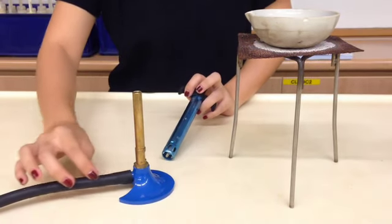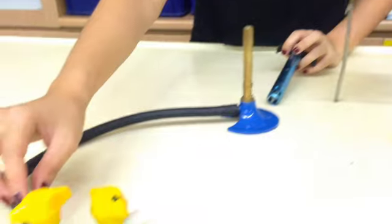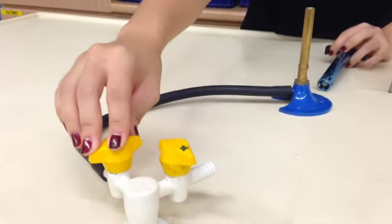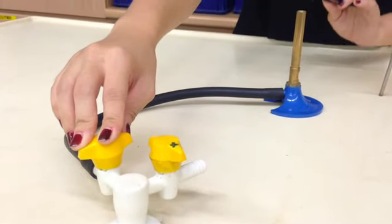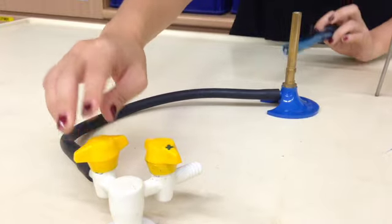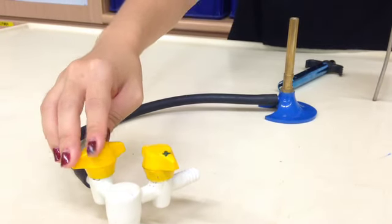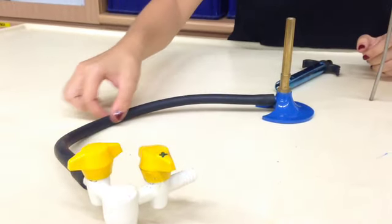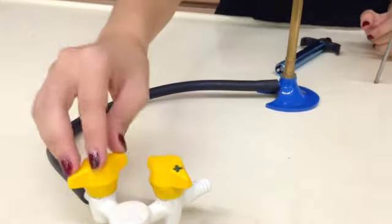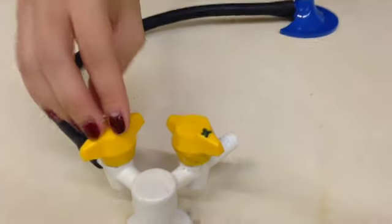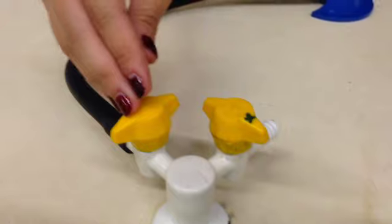For the Bunsen burner, we always have it connected to the gas tab. Make sure that when you turn on the gas tab, you turn on the correct gas tab and light the correct Bunsen burner. The gas tab when it's closed is always perpendicular to the gas line. So make sure that when you turn it off or on, when it's closed, it's supposed to be perpendicular.